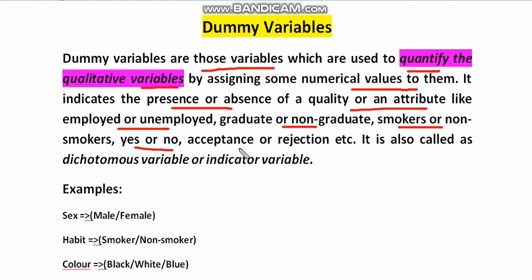Dummy variables may also be called dichotomous variables or indicator variables. In the simplest understanding, we quantify those qualitative variables for making use in our regression analysis.